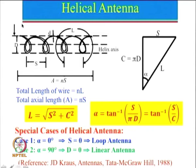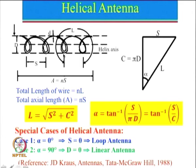Let us look into the helical antenna again. We define the helical antenna with the diameter of the helix and the helical axis. If the radiation is in the direction of the axis, we call it axial mode; if the radiation is perpendicular to this axis, we call it a normal mode antenna. We define the diameter of the helix, the diameter of the wire, the spacing between the two turns — which is generally kept constant — and here the length L is the length of one single turn.